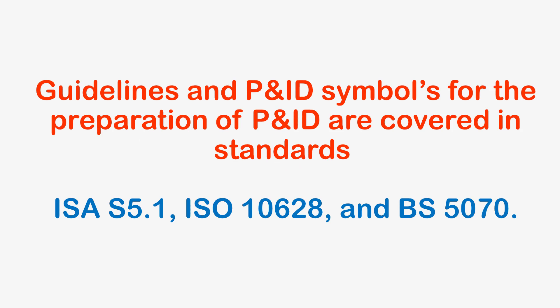Now let's get into P&ID symbols. There are lots of P&ID symbols used to represent equipment, piping, instruments, valves, and control valves. Piping design engineers must be well conversant with P&ID symbols to be able to read the P&ID. The guidelines and symbols used for preparation of P&IDs are taken from standards such as ISA S5.1, ISO 10628, and BS5070.